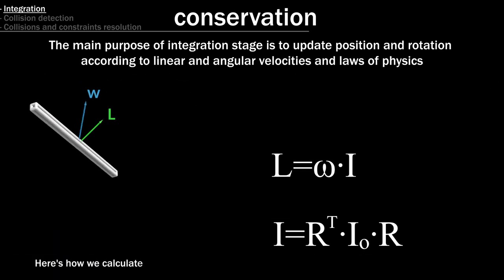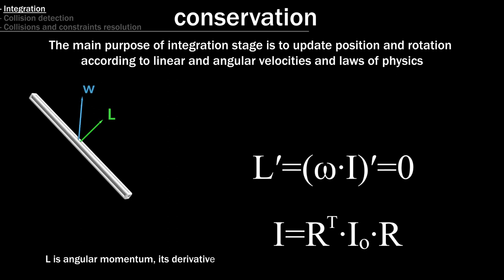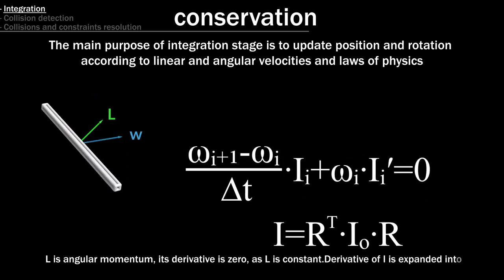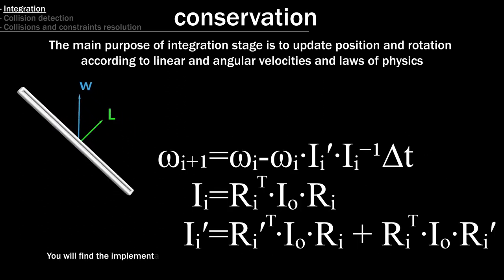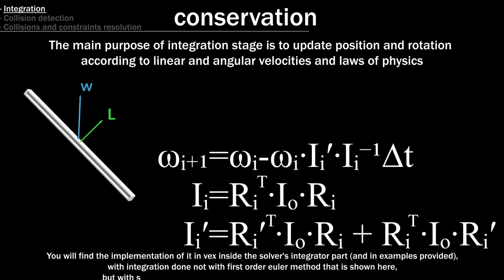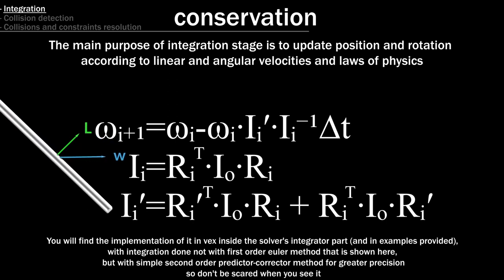Here's how we calculate angular velocity according to the conservation of angular momentum law. L is angular momentum, its derivative is zero, as L is constant. Derivative of I is expanded into derivatives of matrices of rotation. And here we have it. You will find the implementation of it in VEX inside the solver's integrator part, with integration done not with first-order Euler method that is shown here, but with simple second-order predictor-corrector method for greater precision, so don't be scared when you see it.